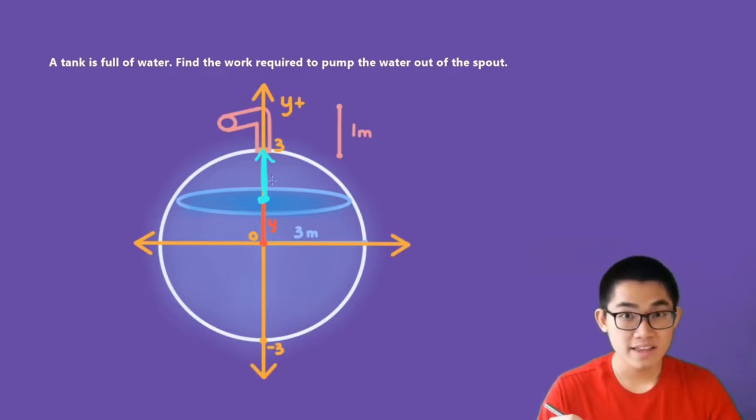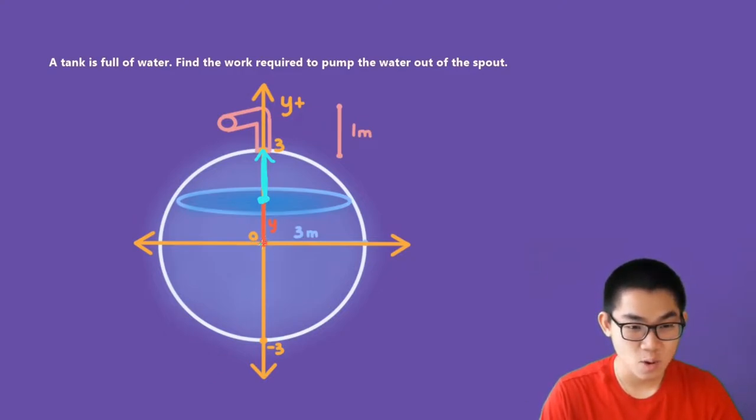Now one thing to notice is that in our previous episodes, we have already established the fact that the distance from the origin to our layer of water is Y. So what is this distance? Well, this distance will simply be three minus Y. And that's because the radius is three.